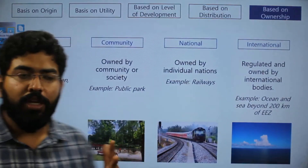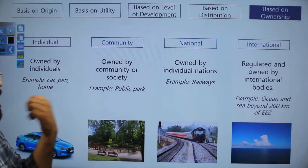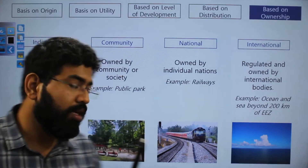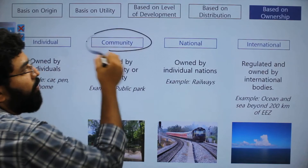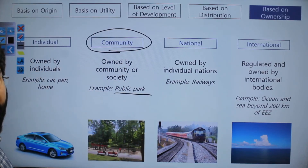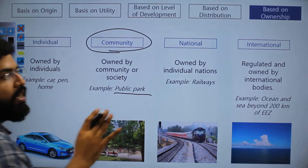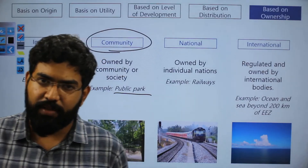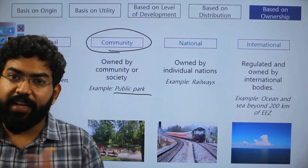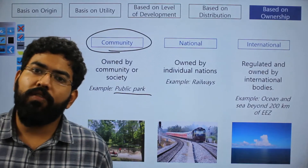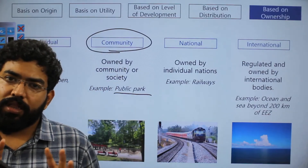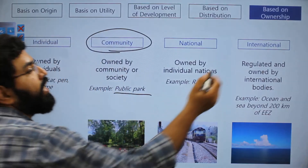Based on ownership: if a private individual owns a resource, it is an individual resource — like this pen in my hand that I own. If a community owns it, it is a community resource — like some parks that are owned and used by specific communities. Resources owned by the government of India or any country are national resources — like defense, Indian Railways, and coal mines.